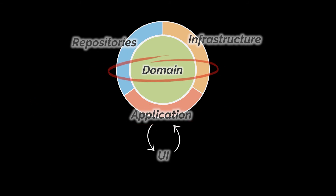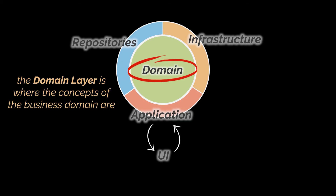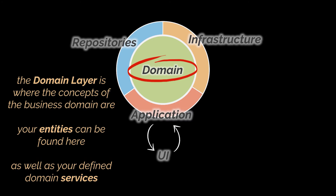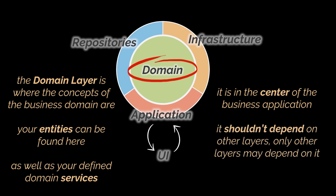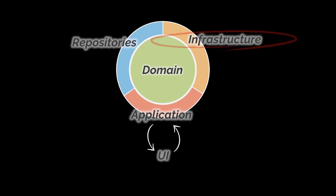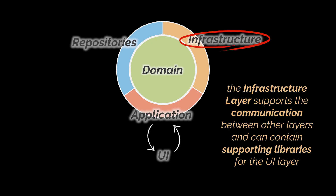The domain layer is where the concepts of the business domain live — the classes, the methods, etc. It has all the information about business cases and business rules. This is where entities are found: an entity is an object with a unique identity guaranteed via a unique key, which remains even when its attributes change — like a user, a product, or an order. This part also contains services with defined operational behavior, named according to the ubiquitous language. Most importantly, the domain layer is at the center of the business application — it should be separated from the rest of the layers and shouldn't depend on other layers or their frameworks; only other layers may depend on it.